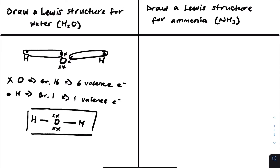It's important to note that hydrogen can only form one bond because it needs just one more electron. Oxygen usually forms two bonds so it can fill its outer shell to eight electrons. As you can see in the diagram, we do not write the dots or crosses that are in the bond — the bond itself represents two electrons.